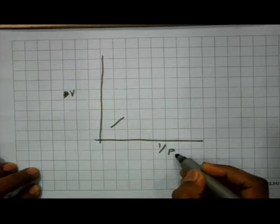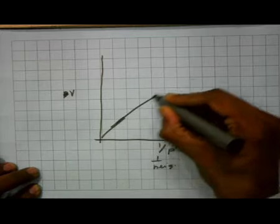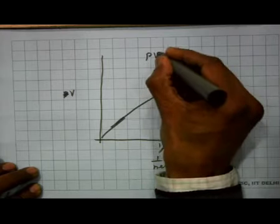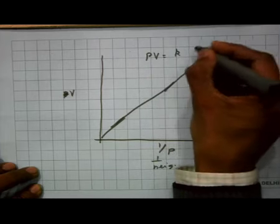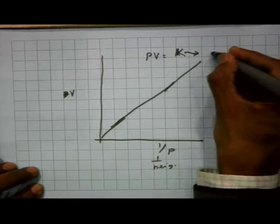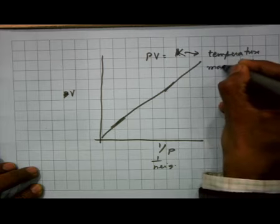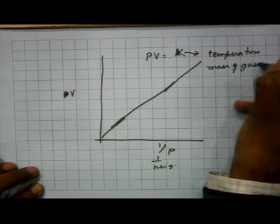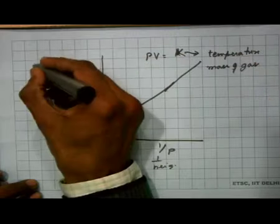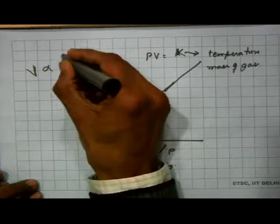If you take 1 over the height and plot it, you will find that PV equals a constant K, and this K is a function of the temperature and the mass of the gas. This is the first result of Robert Boyle, which tells you that the volume occupied by the gas is proportional to 1 over the pressure.